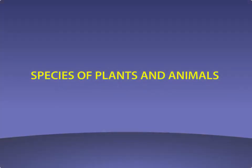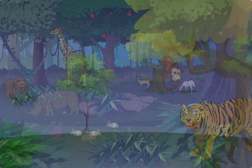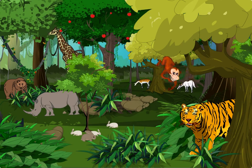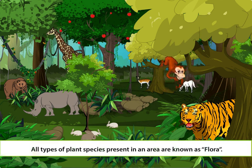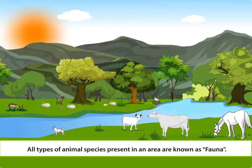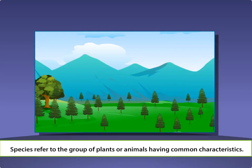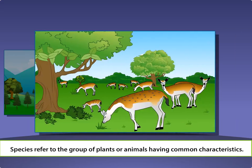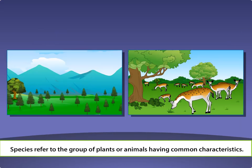Species of plants and animals. We know that there are lots of plants and animals of different varieties on the earth. All types of plant species present in an area are known as flora, and all types of animal species present in an area are known as fauna. Species refer to the group of plants or animals having common characteristics. Let's understand the types of species.